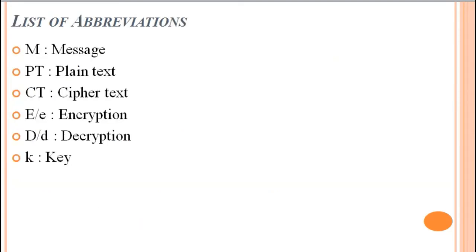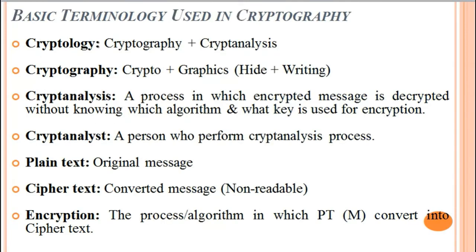Common abbreviations used in cryptography: M means message, PT means plain text, CT means cipher text, E means encryption, D means decryption, and K is used for the secret key.